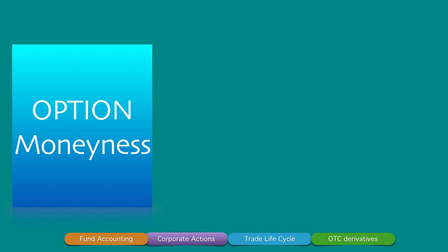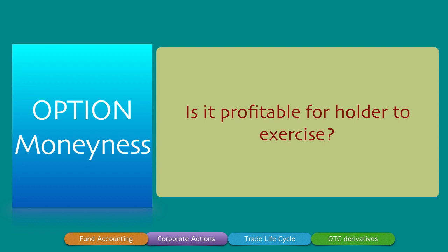This video focuses entirely on the moneyness of an option — understanding at what point the option becomes profitable to exercise. The holder or buyer of the option has all the rights, so we calculate moneyness from the buyer's perspective. It makes little sense to calculate moneyness from the seller's point of view unless the seller is designing a straddle or corridor strategy.